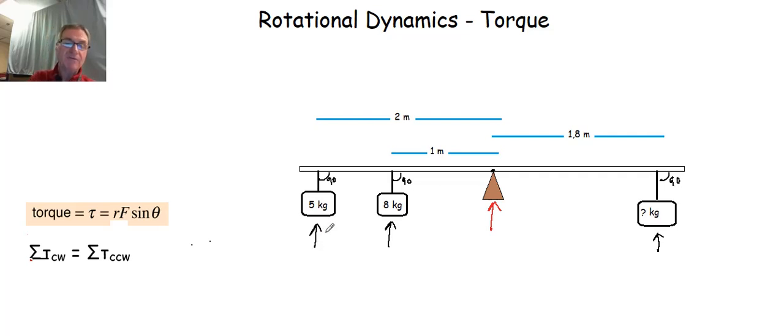So we have some weights. We have a five kilogram weight on the left, an eight kilogram weight on the left, and then we have an unknown weight or mass over on the right. And it's going to be placed 1.8 meters from the pivot point. What we're trying to figure out is just what that mass has to be in order to balance out our seesaw.